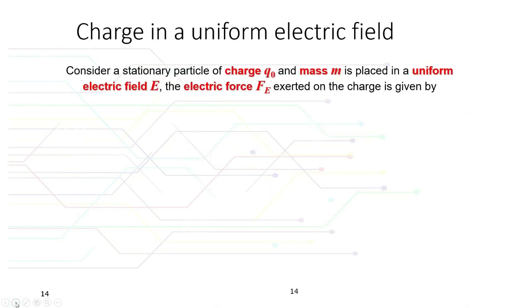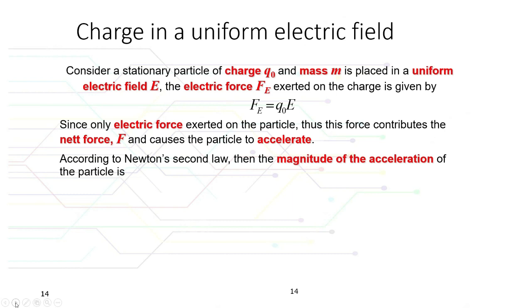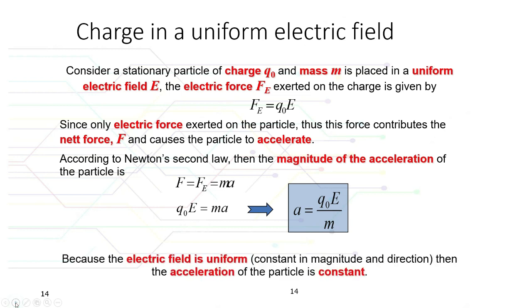Now let's briefly discuss charge in a uniform electric field. Consider a stationary particle of charge q₀ and mass m placed in a uniform electric field E. The electric force F exerted on the charge is given by F = q₀E. Since only the electric force acts on the particle, this force is the net force and causes the particle to accelerate. By Newton's second law, F = ma, so q₀E = ma, giving an acceleration of a = q₀E/m.